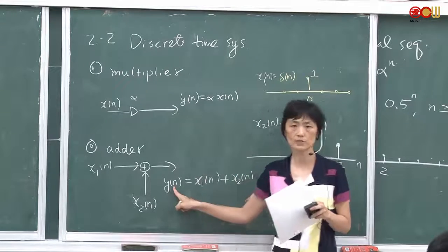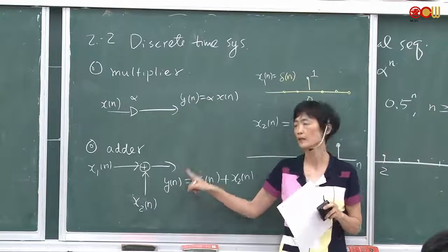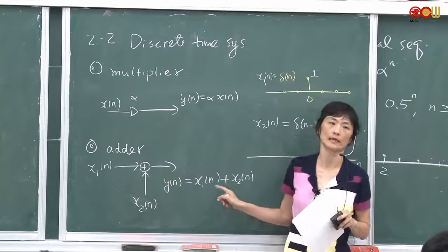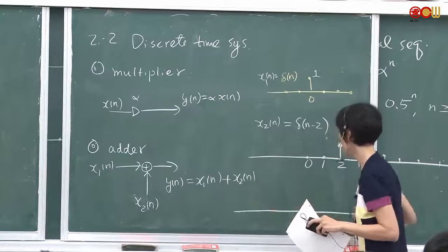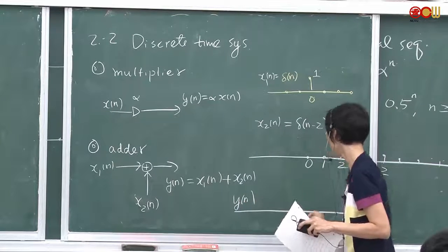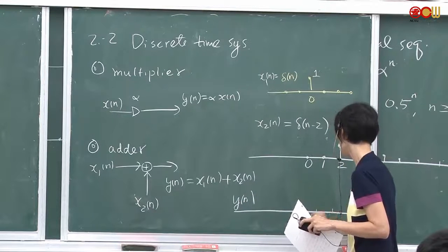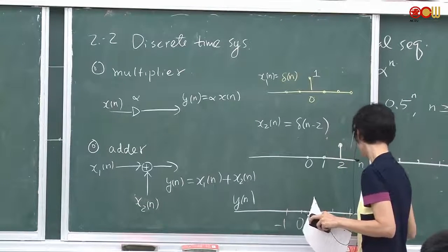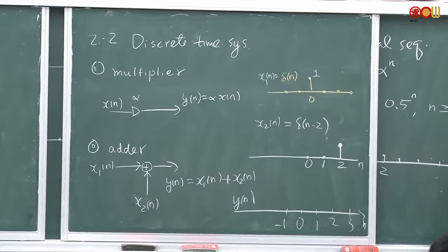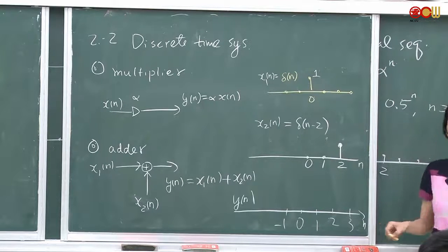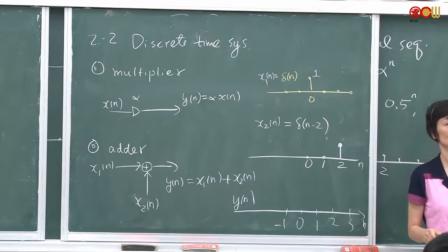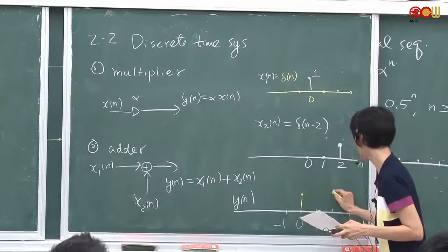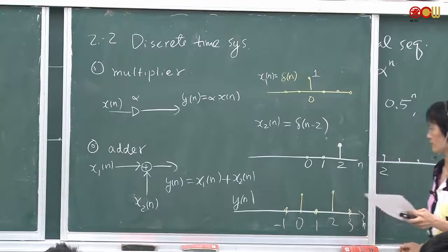For each sample, yn is the nth sample of x1 plus the nth sample of x2. So what would be the output yn? It has two non-zero samples: one at zero and one at two. So that's what it looks like.